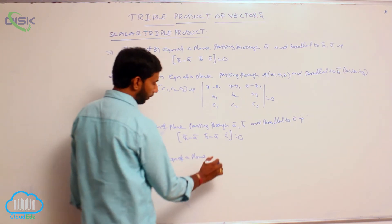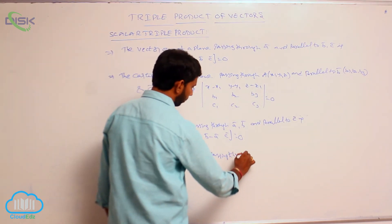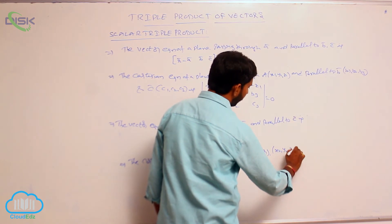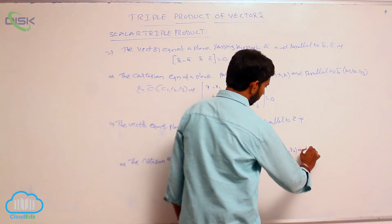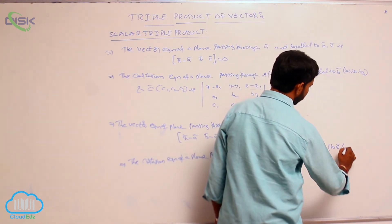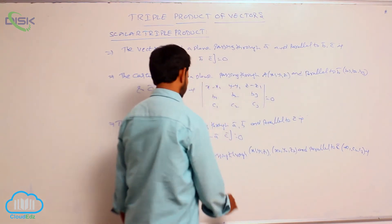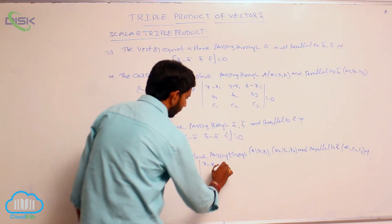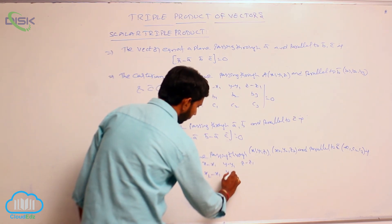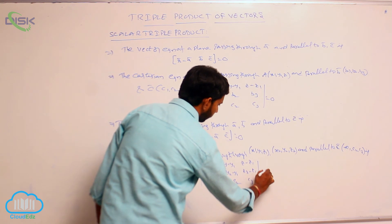The Cartesian equation of a plane passing through the points (X1, Y1, Z1) and (X2, Y2, Z2) and parallel to the vector C̅ = (C1, C2, C3) is the determinant of: |X−X1, Y−Y1, Z−Z1; X2−X1, Y2−Y1, Z2−Z1; C1, C2, C3| = 0.